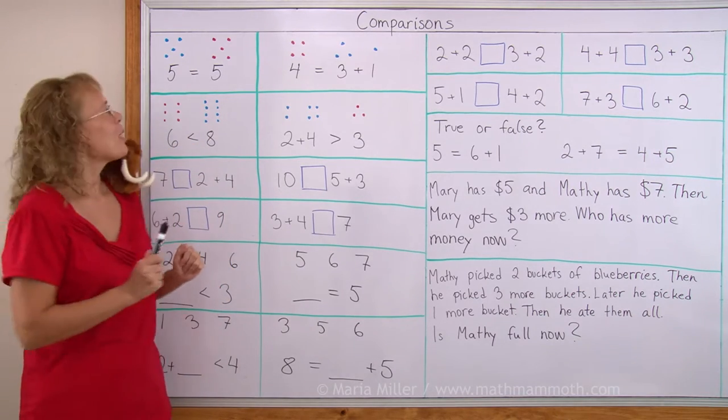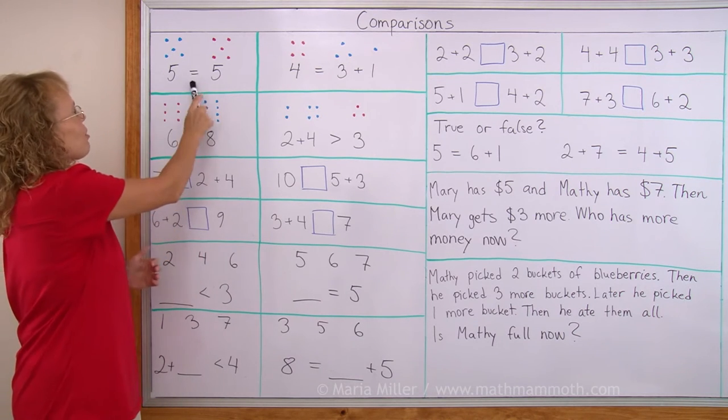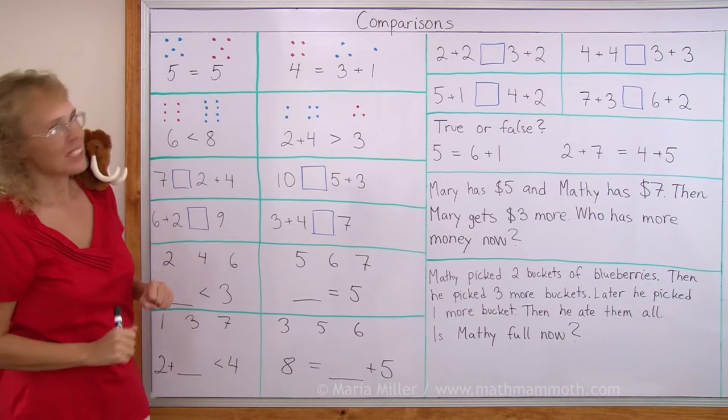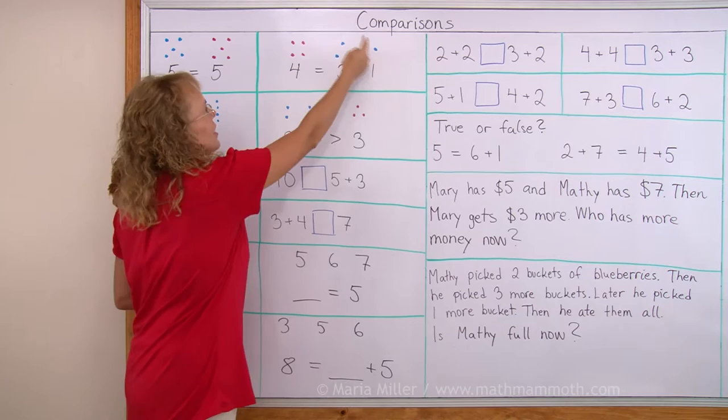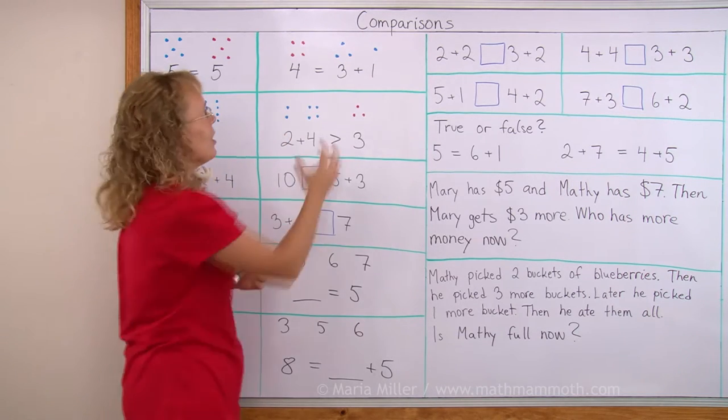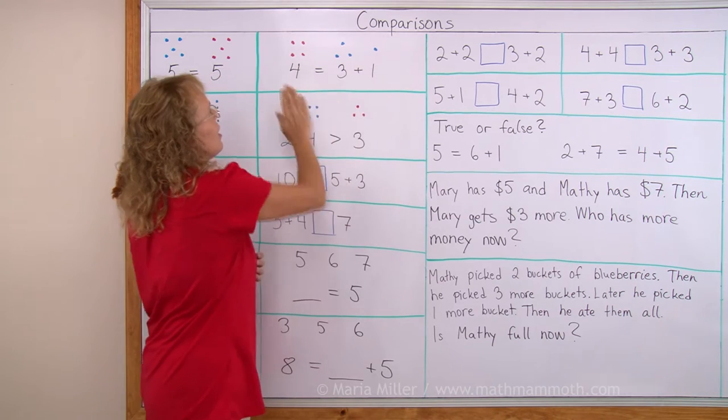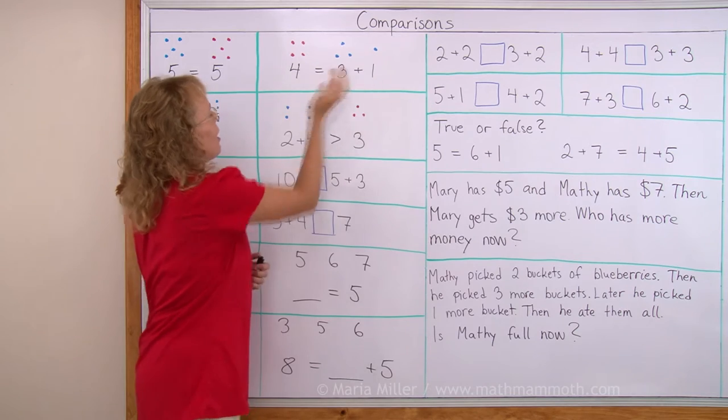Now, first, I want to show you that here's an equal sign. And so 5 equals 5, right? Simple. And 4 equals 3 plus 1. You see, on this side we have 3 and 1, so that makes a total of 4. So there's 4 here on this side and 4 on this side, so 4 equals 4. 4 equals 3 plus 1.